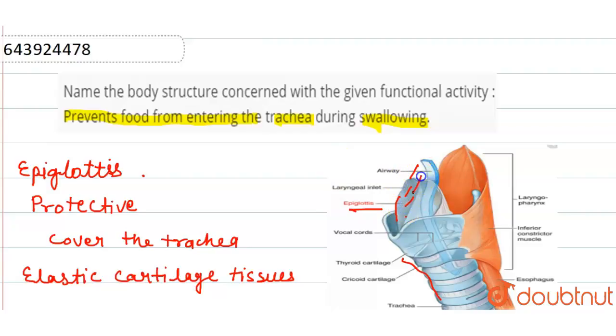During gas exchange, oxygen and carbon dioxide exchange occurs. Oxygen enters and carbon dioxide exits out of the body. Then the epiglottis becomes open at the time of respiration.